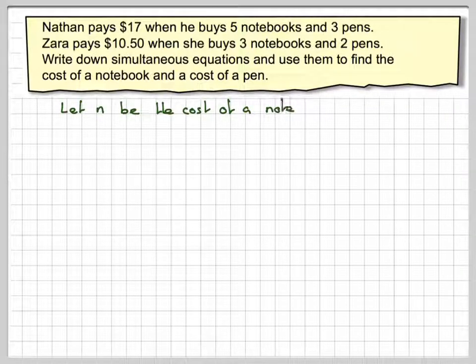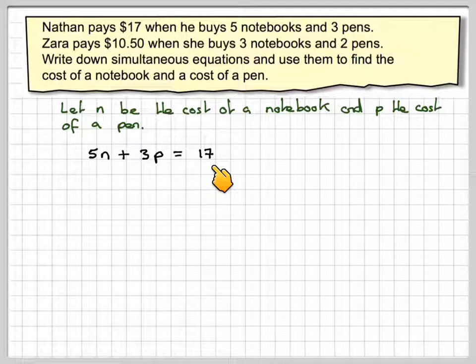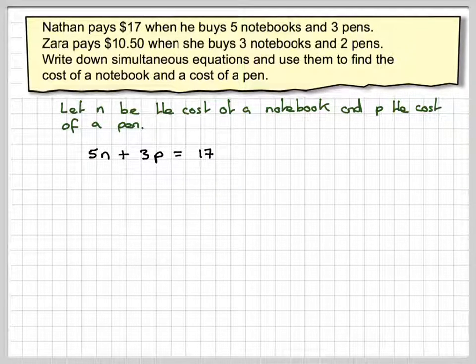Let N be the cost of a notebook and P be the cost of a pen. So in the case of Nathan, that's 5 notebooks and 3 pens for a total cost of $17. Now you could change that into cents if you wanted to.